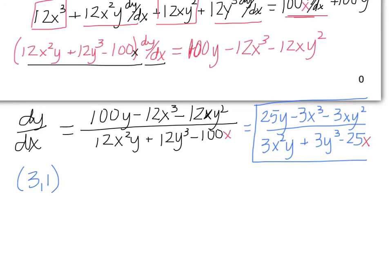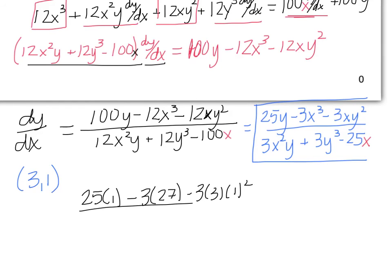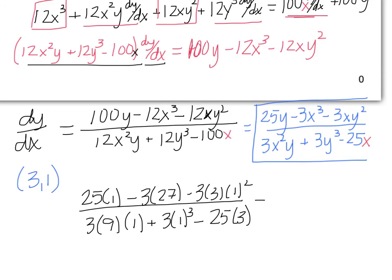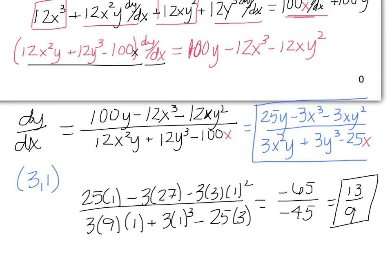So now we can plug in our point (3, 1). We are left with 25 times 1, minus 3 times 3 cubed which gives us 27, minus 3 times 3 times 1 squared, divided by 3 times 3 squared which is 9, times 1, plus 3 times 1 cubed, minus 25 times 3. When we simplify this, we end up with negative 65 divided by negative 45, which reduces down to 13 ninths. So all of that worked to get a slope of 13/9.